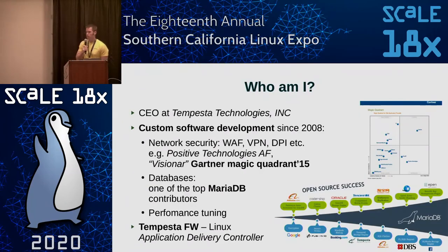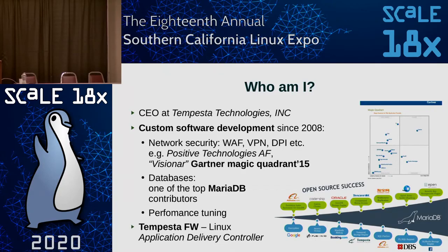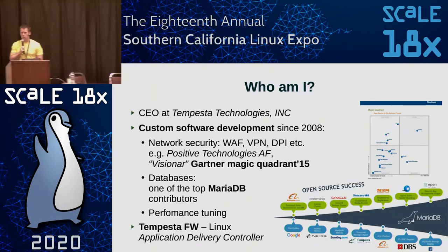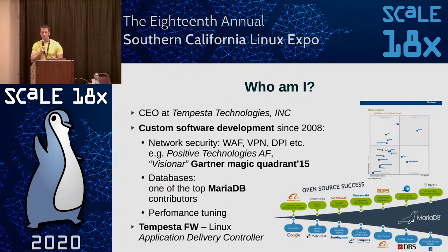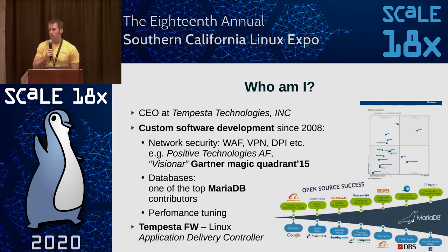We do two types of things. We develop custom software in areas of high-performance networking and databases. We're proud of development of a web application firewall by request of Positive Technologies. We made the first version of the core of the project, and the project was mentioned in Gartner Magic Quadrant in 2015. Also, we're one of the top contributors into MariaDB database.